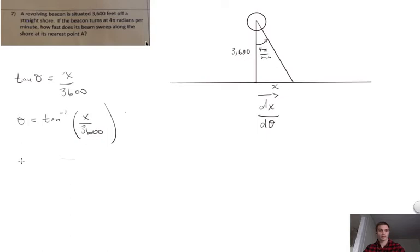So we're going to take d theta dt, this is where we're going to get our angular velocity, equal to 1 over 1 plus x squared over 3,600 squared.